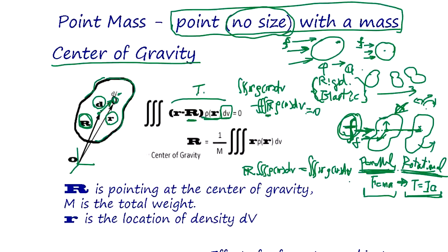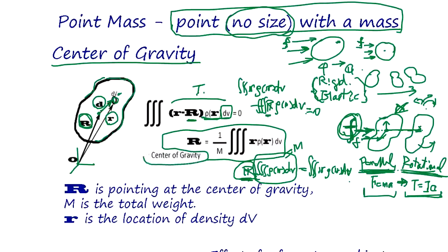Since R is constant, this part — the density integrated by volume — is the total weight M. So the vector R, which is the location of the center of gravity, is given by this equation: R = (1/M) × integral of r · db. This is the center of gravity equation.